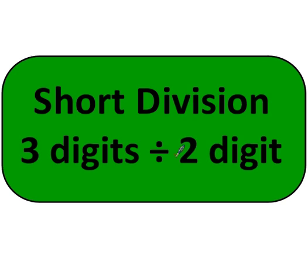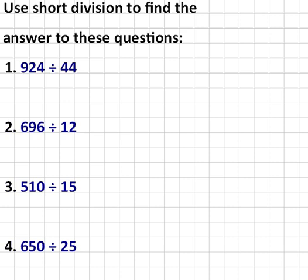This is the third video in the series about short division, and in this one I'm going to show you how to divide a three-digit number by a two-digit number. Here's the first question: 924 divided by 44. I'm going to make some space for 924 and put the 44 there. So that says 924 divided by 44, or how many 44s go into 924.